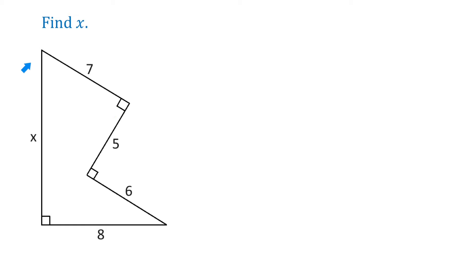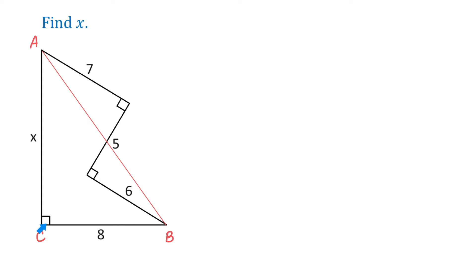Let this point be point A, this one B, and this one C. If we connect A and B, then we will form a right triangle ABC, where AB is the hypotenuse. If we could find AB, then we can use the Pythagorean theorem to find X.